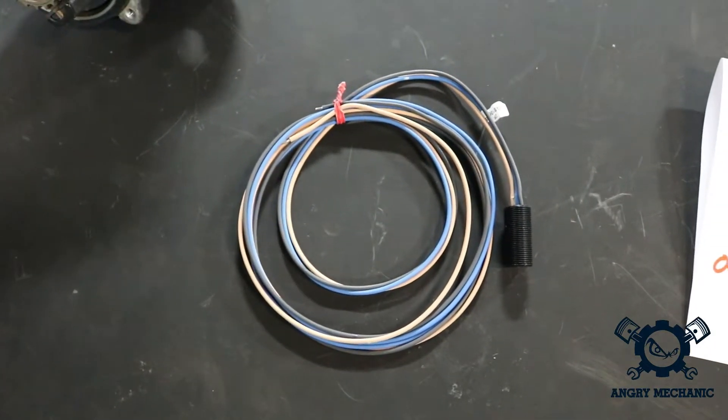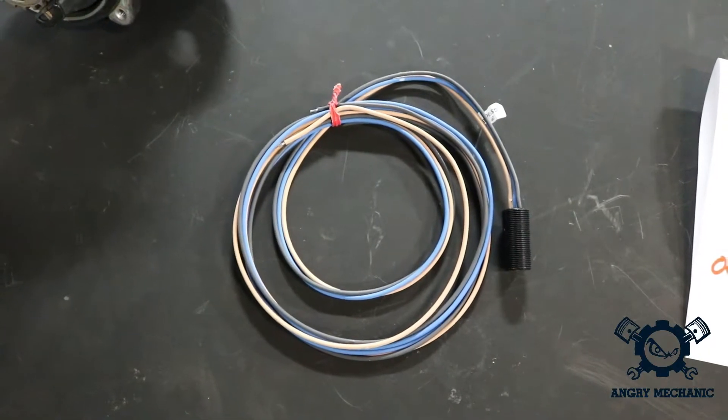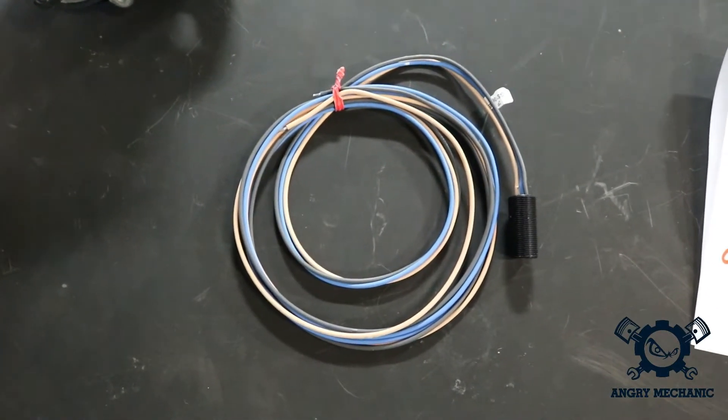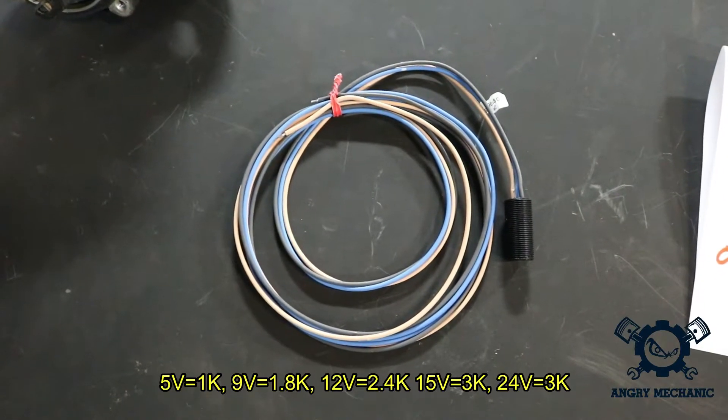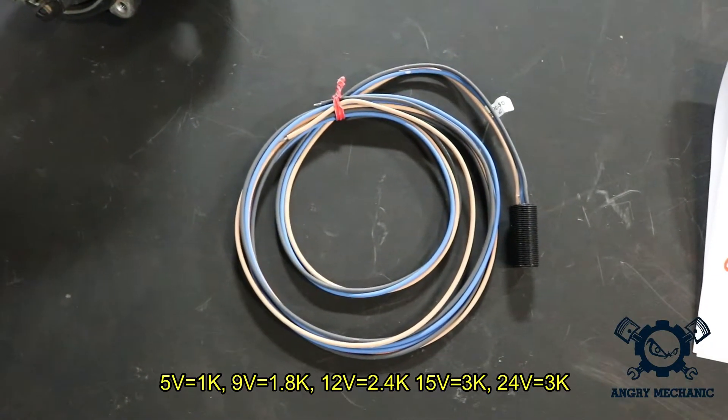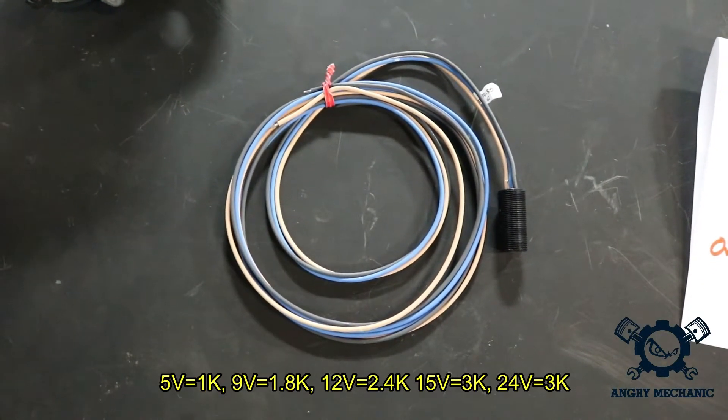In our case, we're going to be soldering a 2.4K resistor into the harness. Depending on how much voltage you're powering the sensor with, you'll have to use a different rating resistor. We'll go over that in the instructions. There's a whole chart for voltage to compare to which type of resistor you need to use to get a nice, clean signal.